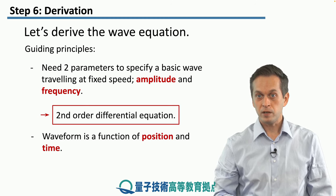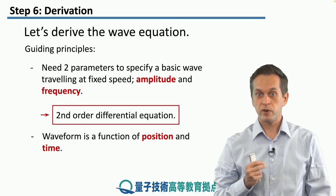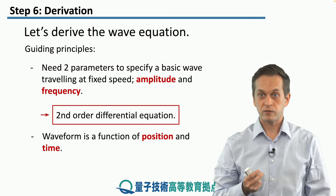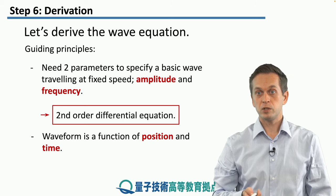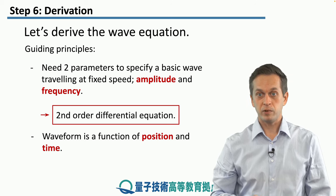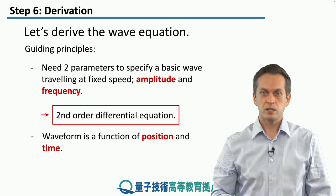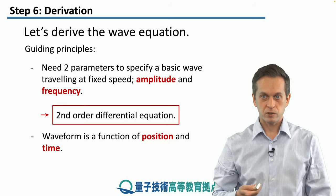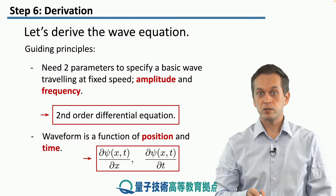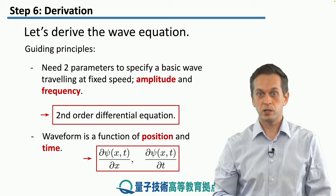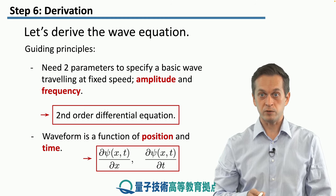The wave is a function of at least two variables. In one dimension, it's a function of exactly two variables: position, which we denote x, and time, which we denote t. So we expect the wave equation to contain rates of change with respect to x and with respect to t — in other words, partial derivatives of psi with respect to x and partial derivatives of psi with respect to t.